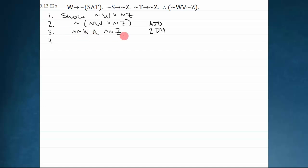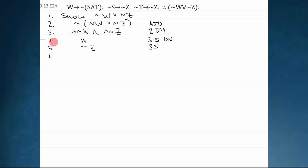Now what I can do with this assumption is: it's a negation of a disjunction. In the past I couldn't do anything with it, but now I can apply DeMorgan's. DeMorgan's says distribute the negation and flip the sign, giving me not w and not z — that is line two, DeMorgan's. Now I can immediately simplify and get at the parts. I simplify line three — it's a conjunction now — to get w, via simplify and double negation. And I simplify to get not not z as well.